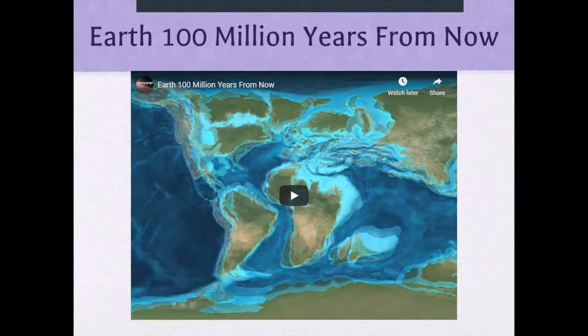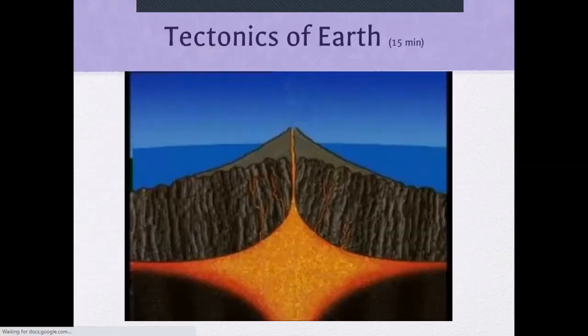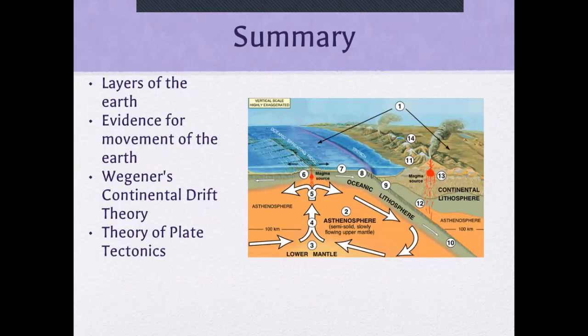There's also a video showing how Pangaea may have formed the world as we know it today — it started as Pangaea, and there have been a few changes and other supercontinent formations along the way. In summary, we talked about the layers of the Earth, the evidence for the movement of the Earth's crust, and Wegener's continental drift theory, which led to the theory of plate tectonics.